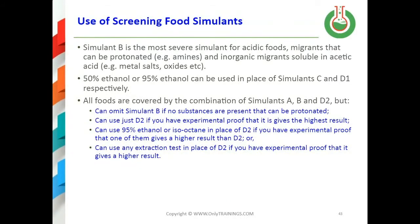All foods are covered by a combination of simulants A, B, and D2. You can omit simulant B if there are no substances present that can be protonated. You can use just D2 if you have experimental proof that it gives the highest results. You can use 95% ethanol or isooctane in place of D2, or any extraction test in place of D2, if you have experimental proof that one of them gives a higher result than D2.